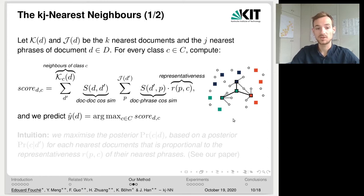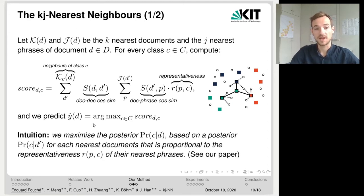The intuition behind that is that we maximize the posterior probability of class membership based on a posterior probability for each of the nearest documents that is proportional to the representativeness of their nearest phrases. So intuitively, we weight each label based on the representativeness of their nearest phrases. Please check out our paper for a more formal derivation of this intuition.